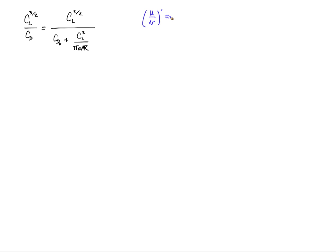So the derivative of u over v is the derivative of u, u prime times v, minus u times the derivative of v divided by v squared. So in our case, u is equal to CL to three halves and v is equal to the drag coefficient.